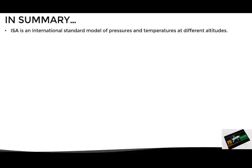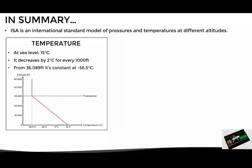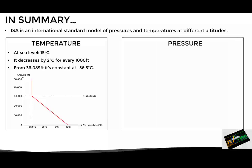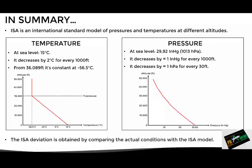Let's see a short summary of everything we talked about in the video. ISA is an international standard model of atmospheric conditions, mainly pressure and temperature at different altitudes. In terms of temperature, it is assumed that at sea level the temperature is 15 degrees and it decreases by 2 degrees for each 1000 feet increase in altitude until reaching 36,089 feet, from where it is considered constant at minus 56.5 degrees. In terms of pressure, it is assumed that at sea level the pressure is 29.92 inches of mercury or 1013 hectopascals, and it is reduced by approximately 1 inch of mercury for every 1000 feet at the first levels. Finally, the ISA deviation is a value obtained by comparing the current conditions in relation to the standard conditions.